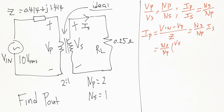We also know the relationship between the secondary voltage and the primary voltage of the transformer, so we can substitute VS. VS is simply the turns ratio of the secondary divided by the turns ratio of the primary — that is (Ns/Np) — multiplied by Vp.